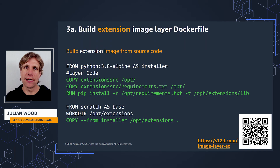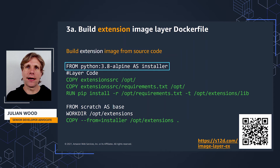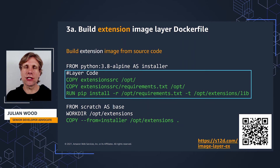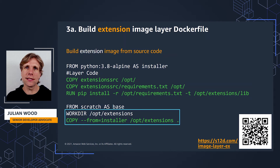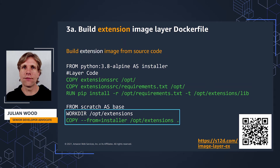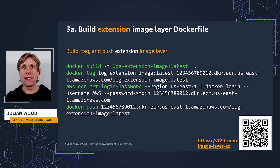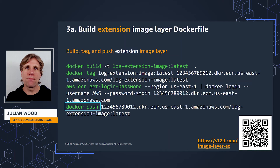If you want to share extension container images in a similar way to Lambda layers, you can package just the extension files as a container image and share the image as you would any other container image. This example starts with a slim Python Alpine layer as a build environment, referenced as an installer layer. It copies the extension files into /opt and runs a pip install to install the requirements. Then the Dockerfile starts a multi-part build from scratch and copies the files from the installer layer into the blank image, creating a clean image with only the extension files and installed requirements. Using the Docker CLI, you build the extension image from the Dockerfile, tag it with a name and version, log on to your repository, and push the layer containing just the extension files to ECR or any other repository.